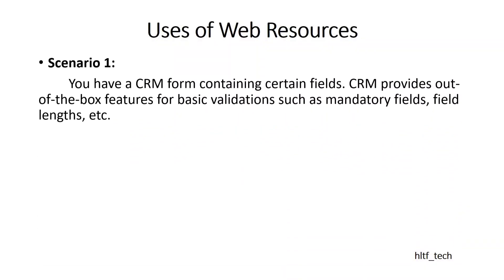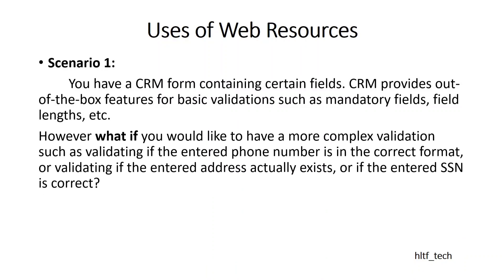The question that must be coming to the mind of beginner viewers is: what is the actual use of web resources? We are going to see three scenarios. The first scenario is that you have a CRM entity form with different types of fields. Microsoft CRM provides out-of-the-box features for basic validations of mandatory fields — you can tag which field is mandatory, business required, or optional, and you can also specify the field length. But what if you need a complex validation, such as requiring that a phone number the user is entering must be in a correct format?